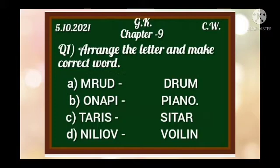Continuing the jumbled letters exercise: the answer for the next item is Drum (D, R, U, M). Then B is Piano (P, I, A, N, O). C is Sitar (S, I, T, A, R). Another set of letters makes the word Violin. Number 3 uses the letters T, A, R, I, S — we can make the word Sitar (S, I, T, A, R).